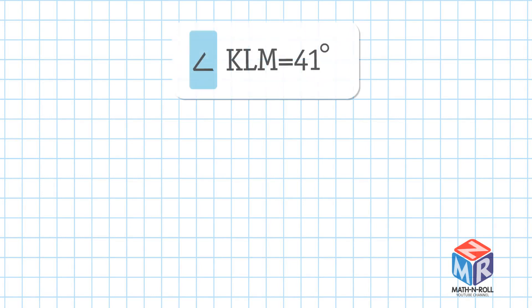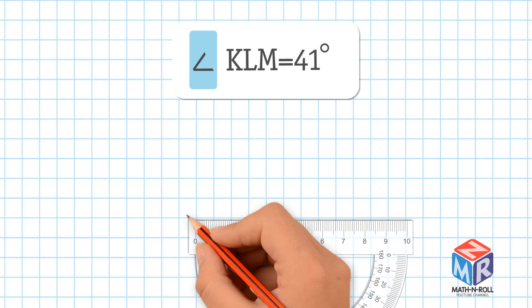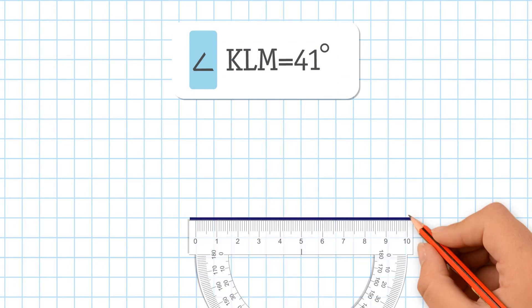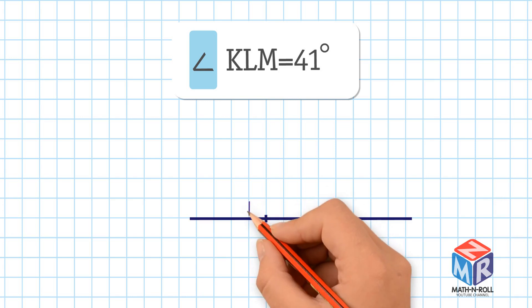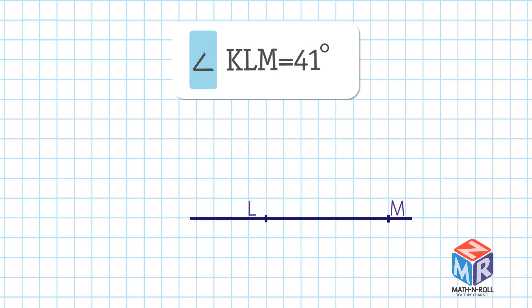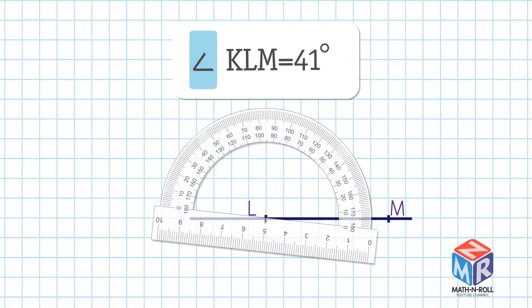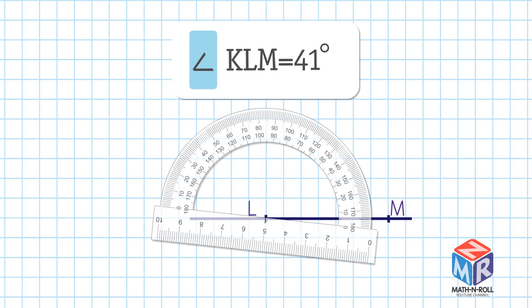Let's try another example. You need to draw Angle KLM with a measure of 41 degrees. Use the straight edge of the protractor to draw a line. Mark the points L and M on it. Place the center point of the protractor on point L. Align Ray LM with the zero mark on the protractor.